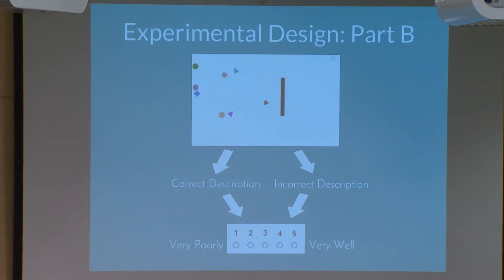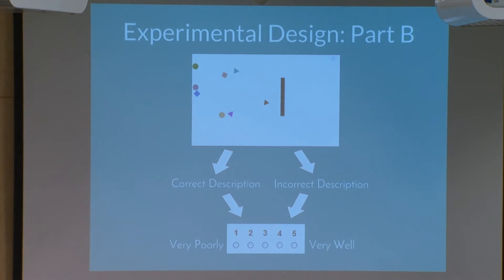For Part B of the experiment, we wanted to test whether or not people would be able to recognize these descriptions. We showed each observer one video of each set size — one video in each pair — and we either paired this video with a correct description of that same video, or a description of the other video of the same set size, which was modeled by the same characters but was an incorrect description. We then asked participants to rate how well or how poorly the description represented the video on a scale of one to five.